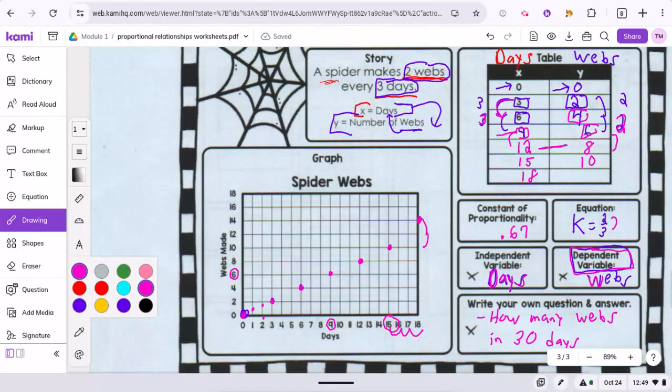And this last one here is 12. Oh, I put the wrong dot here on the graph. It should have been here. There we go for the 18 and 12.